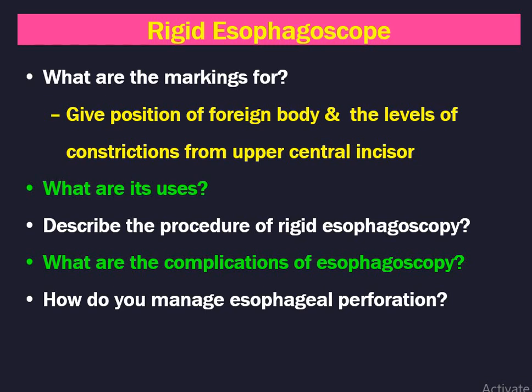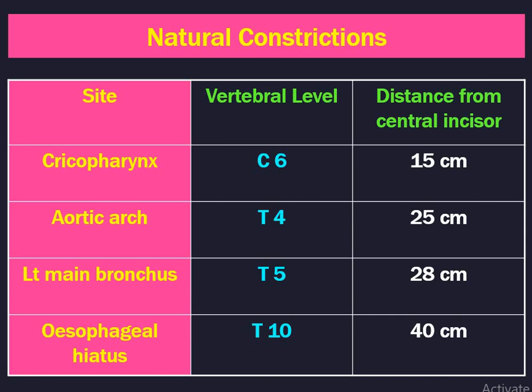We may need to describe the procedure for rigid esophagoscopy. The complications of esophagoscopy, especially esophageal tear and perforations, are important along with how to manage them. The natural constrictions of the esophagus are: cricopharynx at C6, 15 cm from upper central incisors; aortic arch at T4, 25 cm; left main bronchus at T5, around 28 cm; and oesophageal hiatus at T10, 40 cm. For undergraduate level, simply memorize 15, 25, and 40 cm.